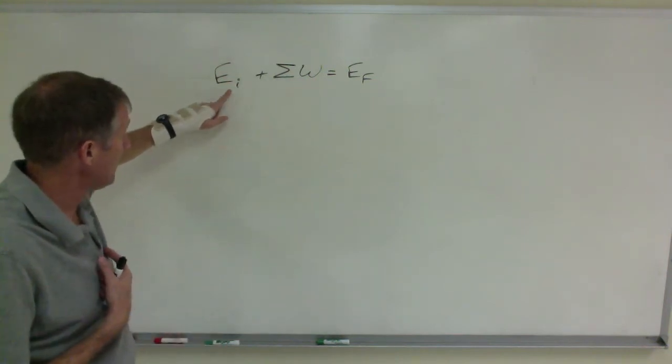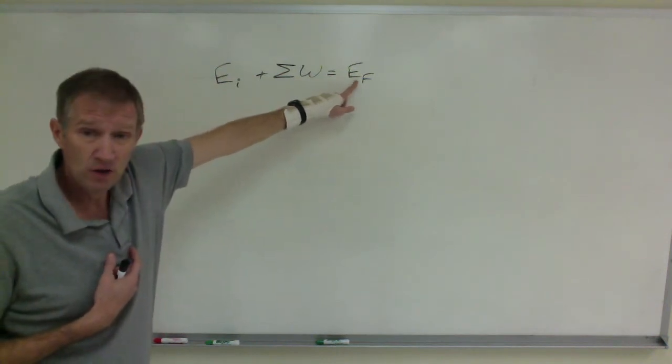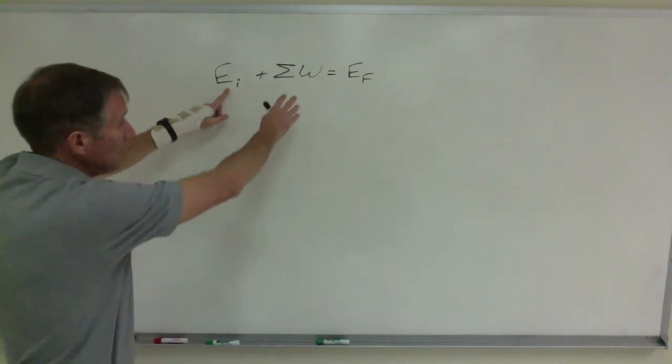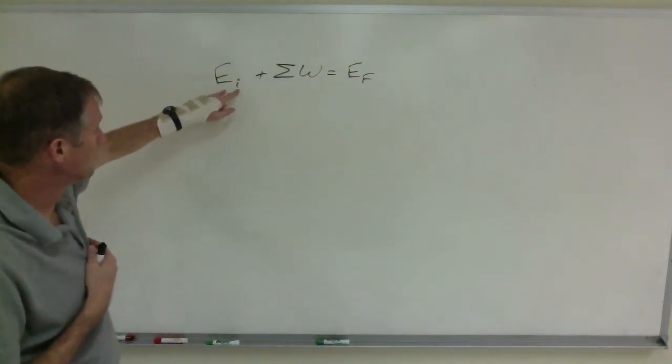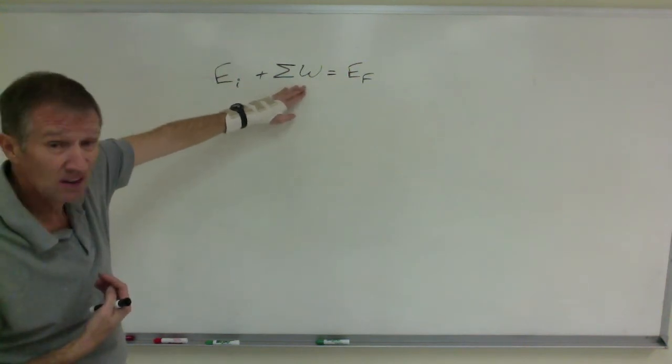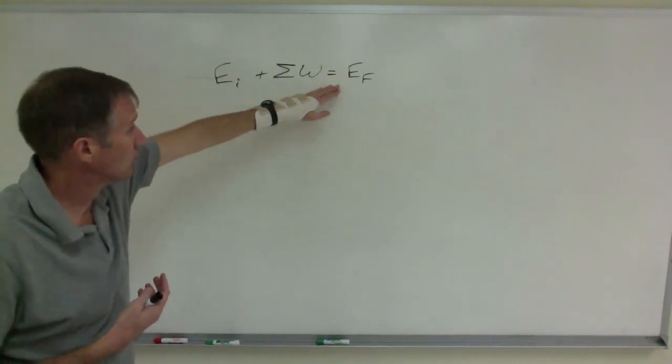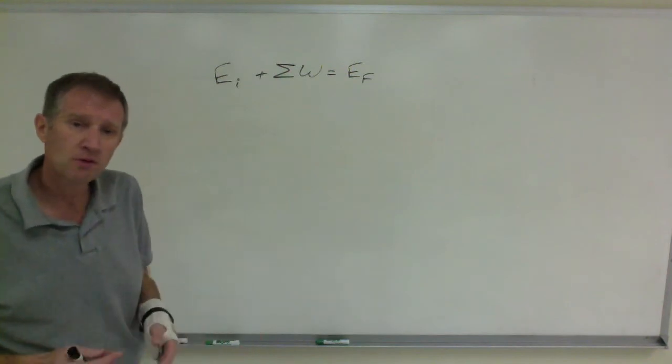You add the energy it had plus the amount that was added. You've got a new number, a new amount of energy. Or maybe this is acting against it like friction, making its energy go down. So it had a certain amount of energy. The energy is taken out because of friction or whatever. So now it has less energy. That's all this says. It is an incredibly useful equation.